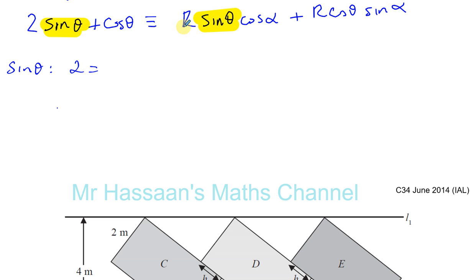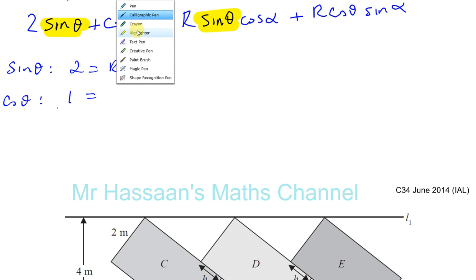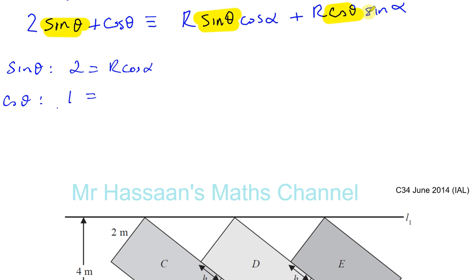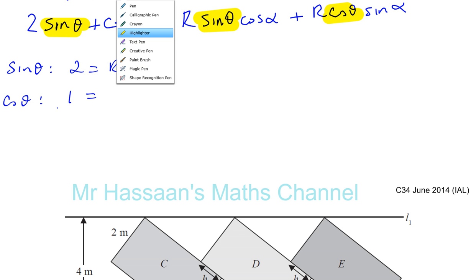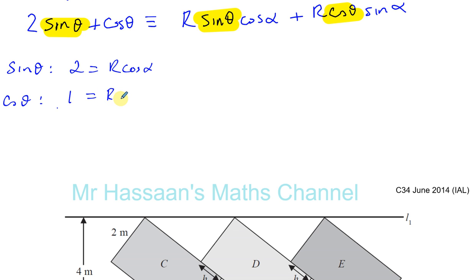If you compare the cosine thetas, on the left-hand side you've got just 1 cosine theta — it's just 1 times cosine theta. On the right-hand side you have R sine alpha times cosine theta. So we've got these two equations: R cosine alpha equals 2, and R sine alpha equals 1.